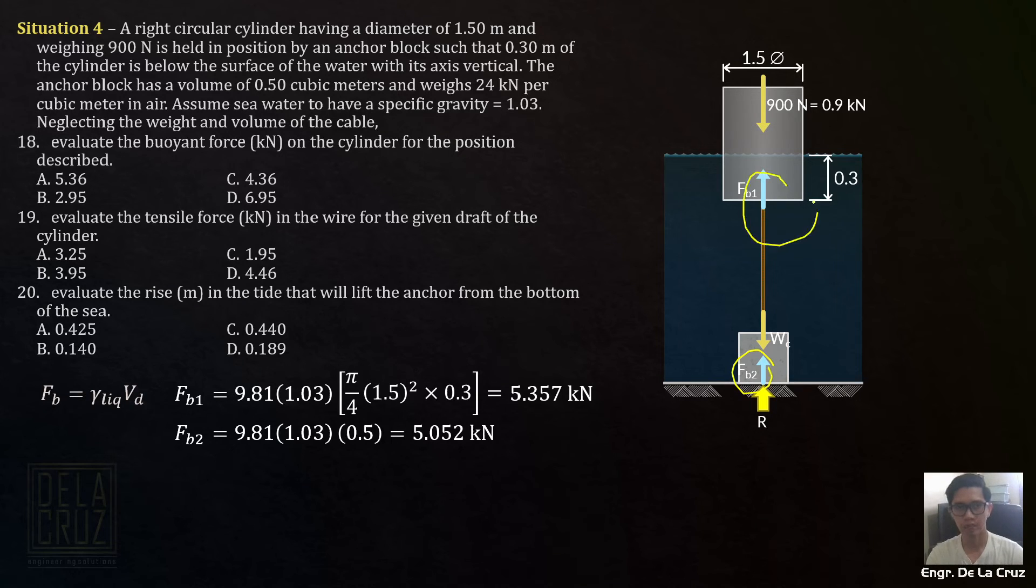We solved FB1 and FB2. Now for the weight of the block, weight of the concrete block. The weight formula is gamma of the object times the volume of the object itself. Gamma of the block or the concrete is 24 kilonewtons per cubic meter. Then volume of concrete block is 0.5. So you have here 12 kilonewtons. Now we've completed this.